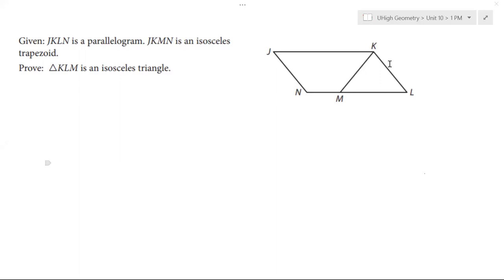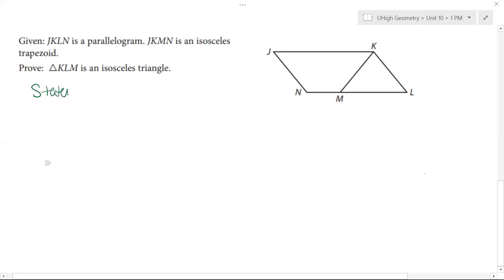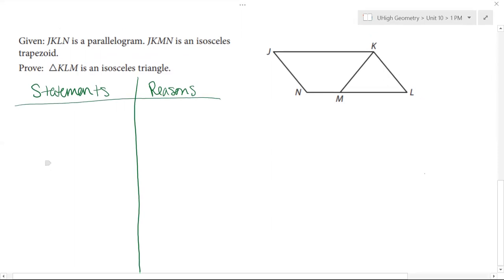I know we haven't done a ton of proofs together, so I did pick the final problem from that trapezoid and kite sheet, and that is what we are going to do. So the problem we're looking at is JKLN is a parallelogram, JKMN is an isosceles trapezoid, and we want to prove that triangle KLM is an isosceles triangle. The big thing here is just being careful and making sure that we're using exactly what we're given and we're not jumping ahead to anything.